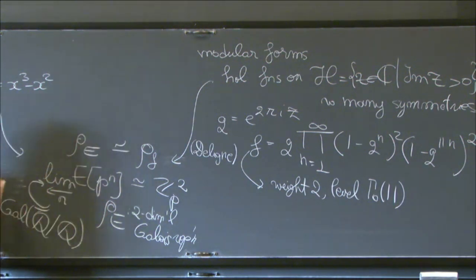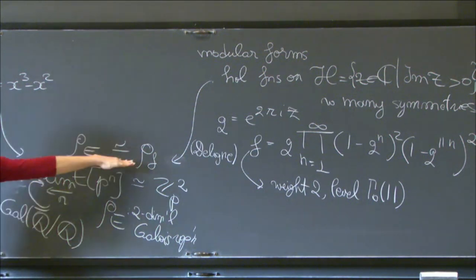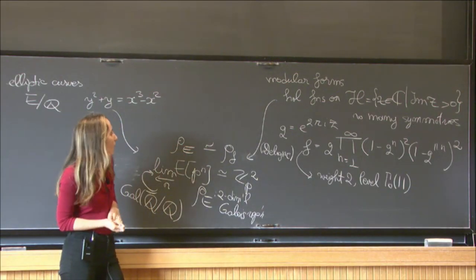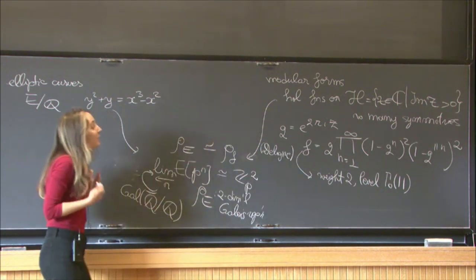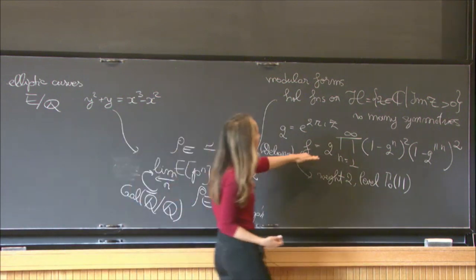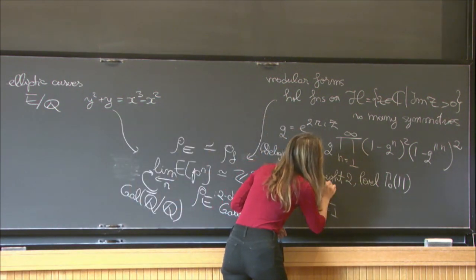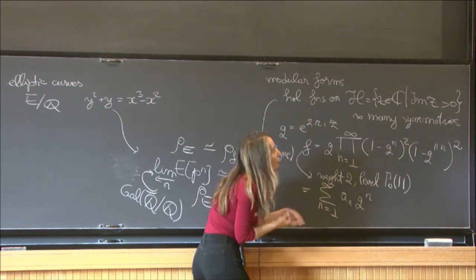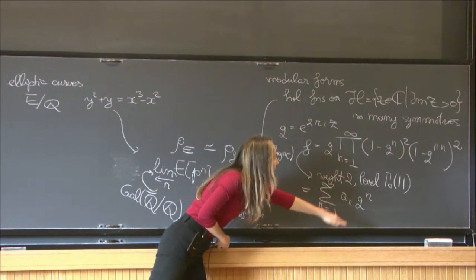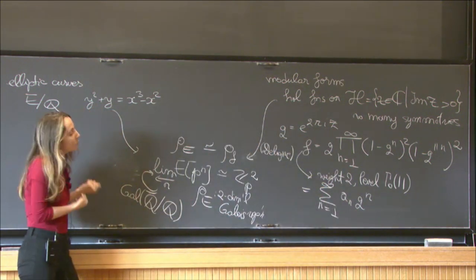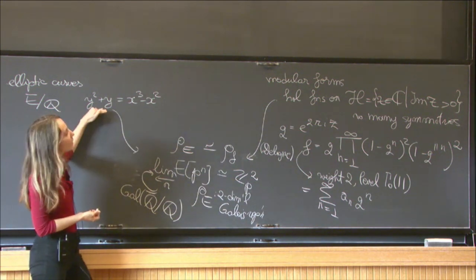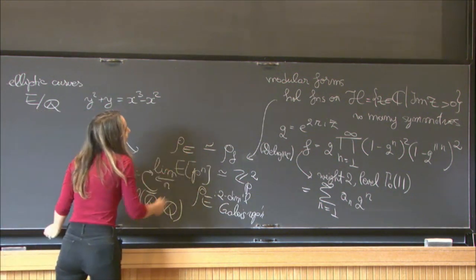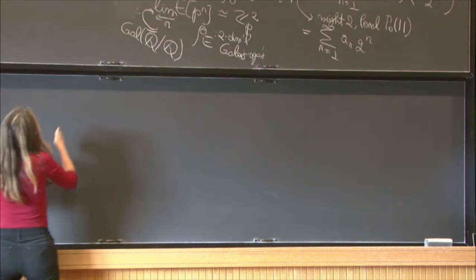The famous statement that elliptic curves are modular is the statement that the Galois representation of the elliptic curve is isomorphic to the Galois representation coming from a modular form. This can be made very precise: expanding the modular form as a sum from 1 to infinity of a_n q^n, the Fourier coefficients a_p for prime numbers are related in a precise fashion to the number of solutions to the elliptic curve equation modulo that same prime.